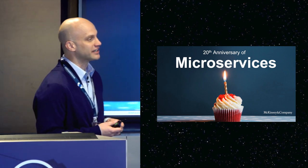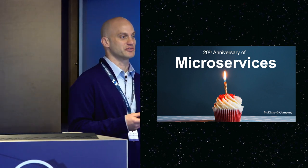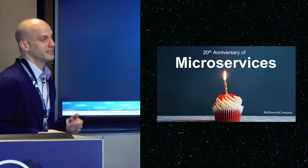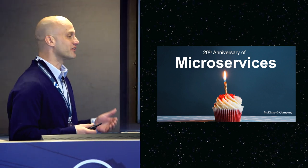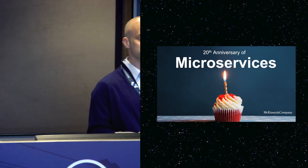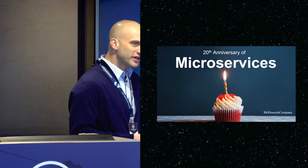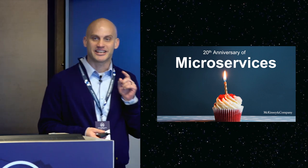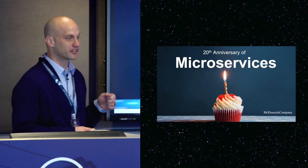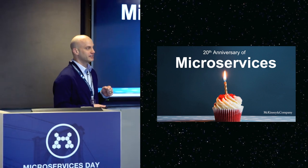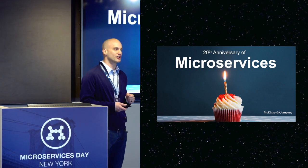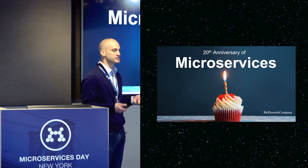A common thing today is microservices come with their own tax. Working in a distributed system is really hard. You have to think about designing for failure, new architectural patterns, and getting your developers used to these things. But what if, in an industry that's well regarded for its high availability and fault tolerance, they've already been working on this for 20 to 30 years? What lessons could we learn?